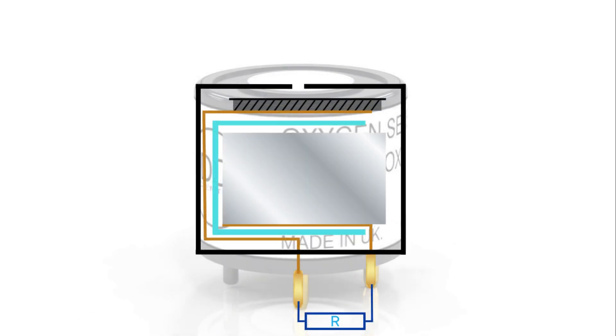The sensor is essentially a sealed box but with a small hole at the top called a capillary which allows oxygen to enter the sensor.